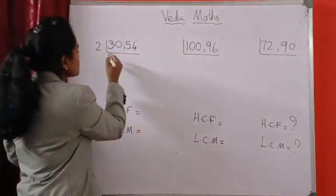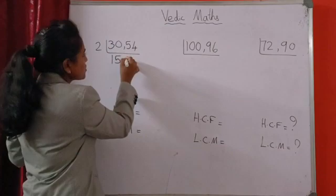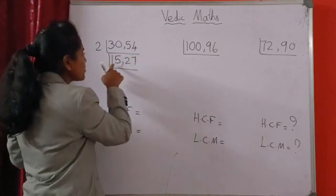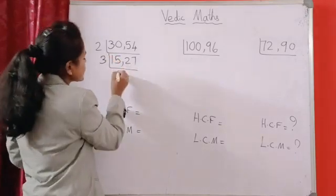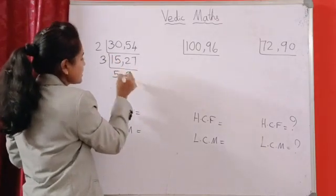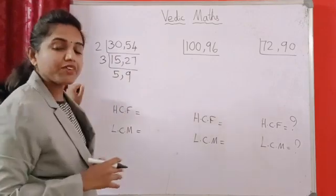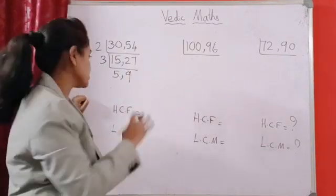2 times 1 is, 2 times 5 is, 2 times 2 is, 2 times 7 is. Next, 15 and 27 is divisible by 3. So, 3 times 5 and 3 times 9. 5 and 9 don't have any common factor, so we can stop here.